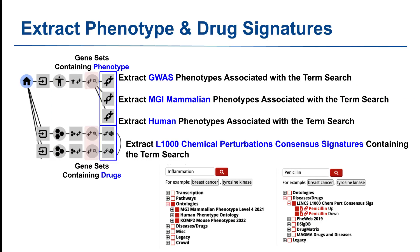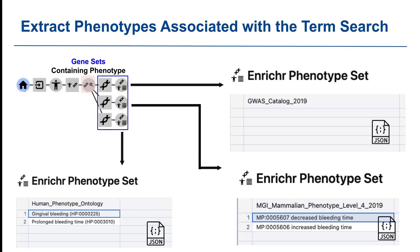From the Enrichr term search results, we extract three different phenotypes from the following datasets: GWAS Catalog 2019, MGI Mammalian Phenotype Level 4 2019, and Human Phenotype Ontology. From the drug term search of Enrichr, we extract L1000 chemical perturbations consensus signatures. The extracted phenotype sets from Enrichr are displayed in a table view. The table could be empty when the dataset doesn't contain the related term. You can easily download these sets in JSON format.